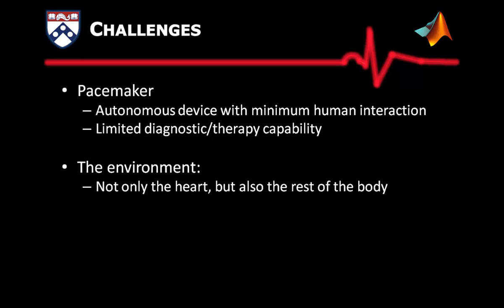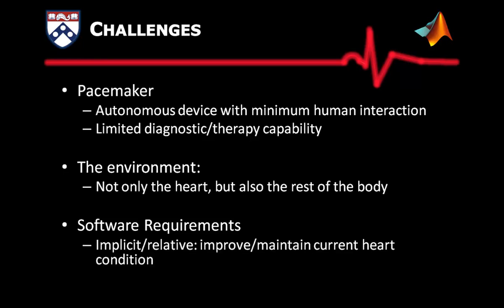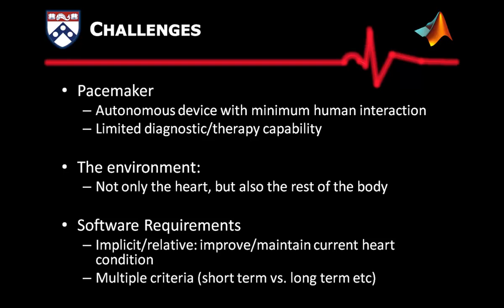The pacemaker senses and paces the heart, but in order to evaluate pacemaker performance, we have to take into account the influence of the heart rate on the rest of the body, which accounts for the overall health of the patient. This significantly increases the difficulty for pacemaker evaluation. In order to evaluate the pacemaker software, we have to know what requirements it needs to satisfy. However, due to the limited capability of the pacemaker, the software requirements are implicit — which is to improve or maintain the current heart condition — and there are multiple criteria for improvements. An algorithm aimed for short-term healthiness may be harmful in the long term. Without unified and explicit requirements, it is very difficult for regulatory agencies like the FDA to evaluate the safety of the pacemaker software.